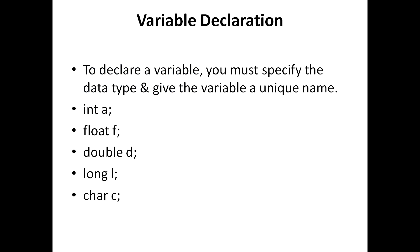How do we declare a variable? Use a variable name like A, and before it specify the data type. For example, if I want to store an integer value in A, I declare the data type as integer. There are 8 primitive data types in Java: integer, float, double, long, character, boolean, short, and byte. You declare the data type before the variable name.